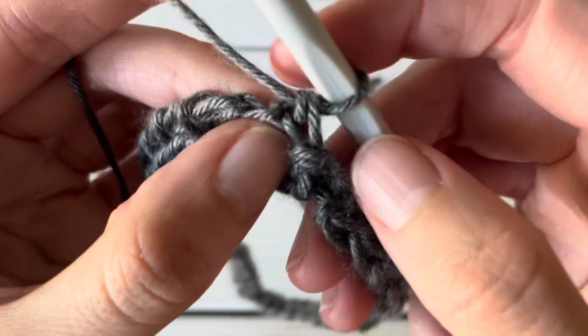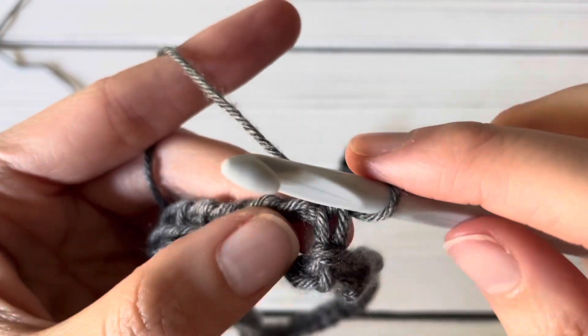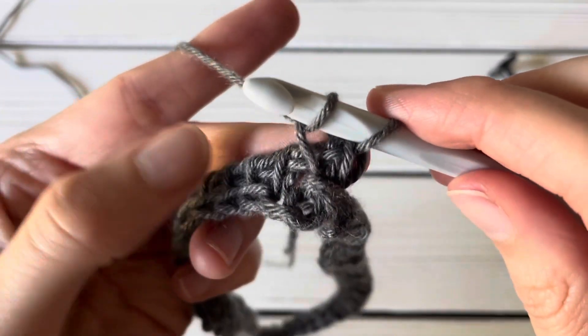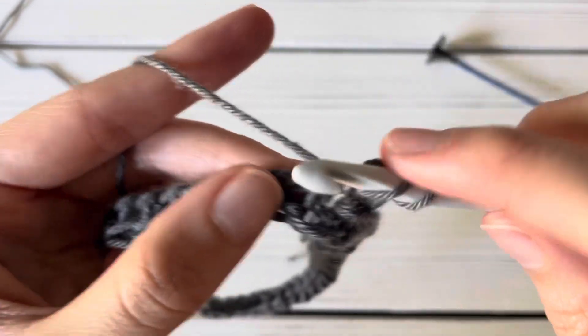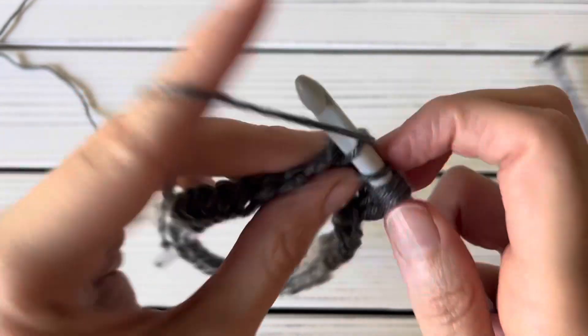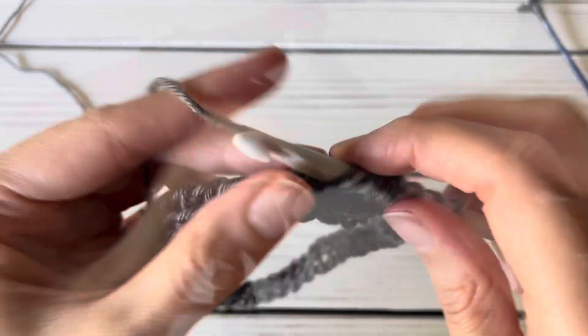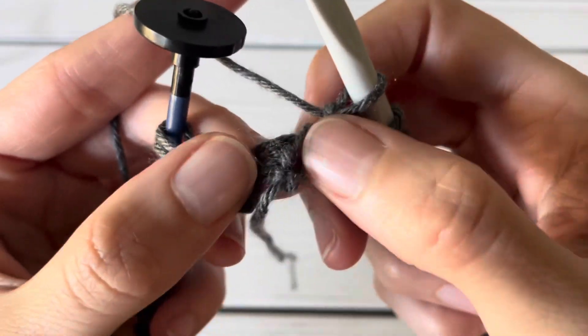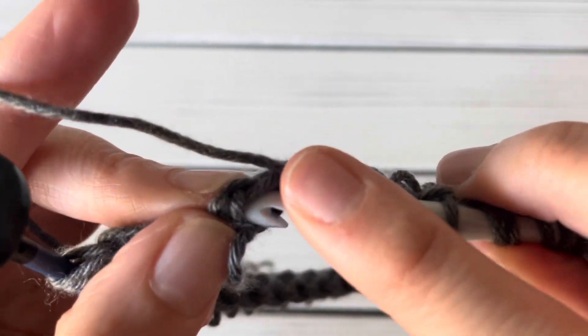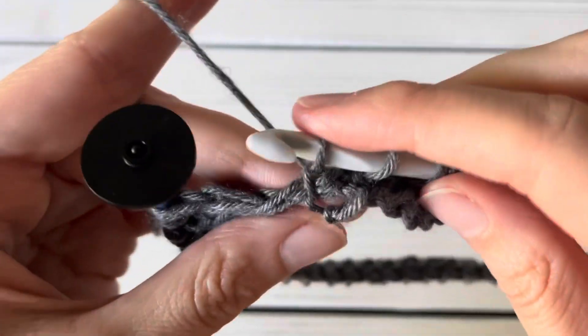Now we can start the forward pass of the second row, but make sure you do not skip that stitch that you worked around. So you always work a Tunisian simple stitch in there, and then you follow the pattern if you're following a pattern. For this tutorial I will just be working Tunisian simple stitches all the way around. Make sure not to miss the very last stitch. It gets very small and can be easily missed, and sometimes a little difficult to work into.